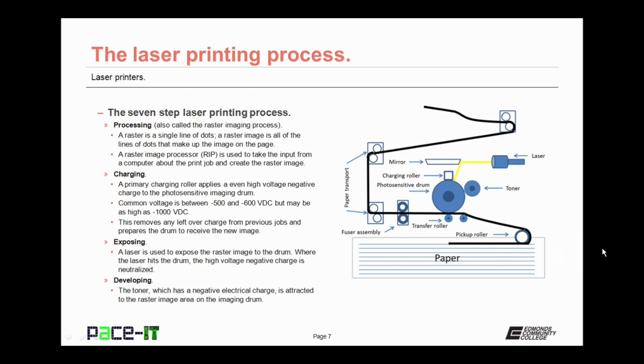A laser is used to expose the raster image to the drum. Where the laser hits the drum, the high voltage negative charge is neutralized, preparing the drum to receive the toner, which occurs in the developing step.